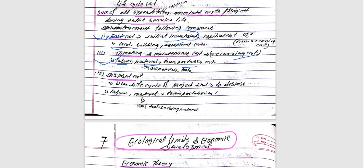Disposal cost occurs at the end of the life cycle of the project. When the project ends, you need to dispose of assets — this involves labor, material, transportation, and so on.